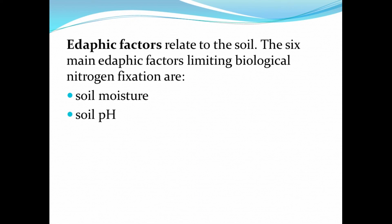The next edaphic factor is soil pH. Soil pH and related problems of calcium deficiency and aluminum and manganese toxicity adversely affect nodulation, nitrogen fixation, and plant growth. Soil pH affects both the legume and the bacteria in the symbiotic relationship. Rhizobium is often negatively affected by soil pH values less than 6. Lime may be added to increase soil pH and thus increase biological nitrogen fixation. An exception: red clover and its Rhizobium appear to function well at pH values less than 6.